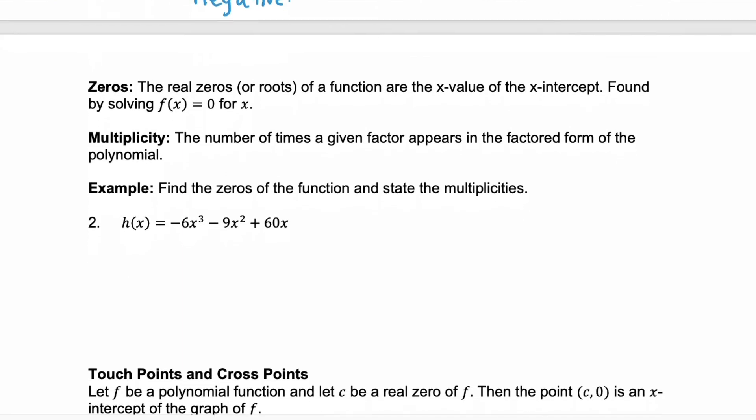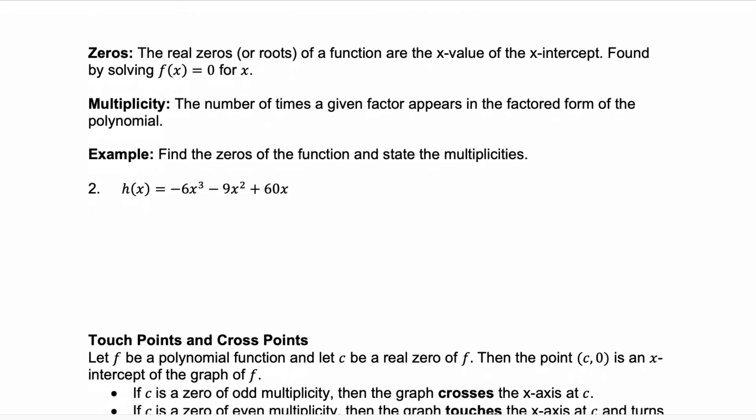Okay, we also need to talk about the zeros of a polynomial function. The zeros, which are also sometimes referred to as roots of a function, are the x value of the x-intercept. So, you find those by solving f(x) = 0 for x.